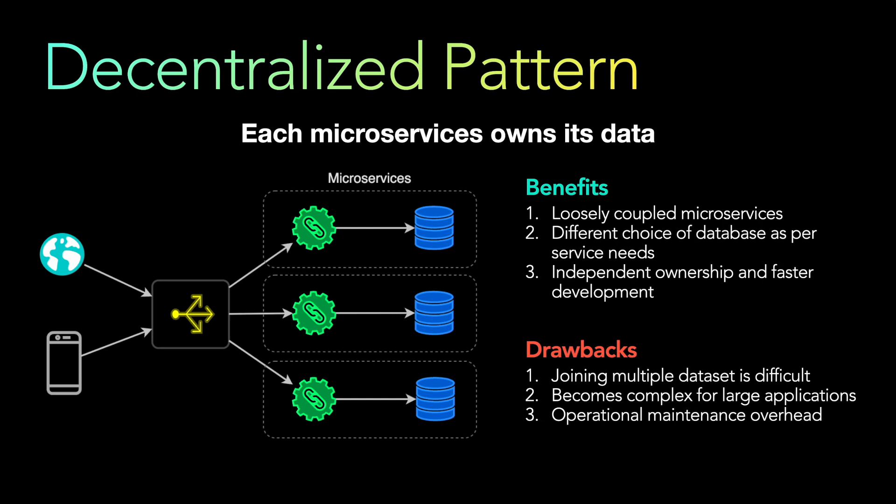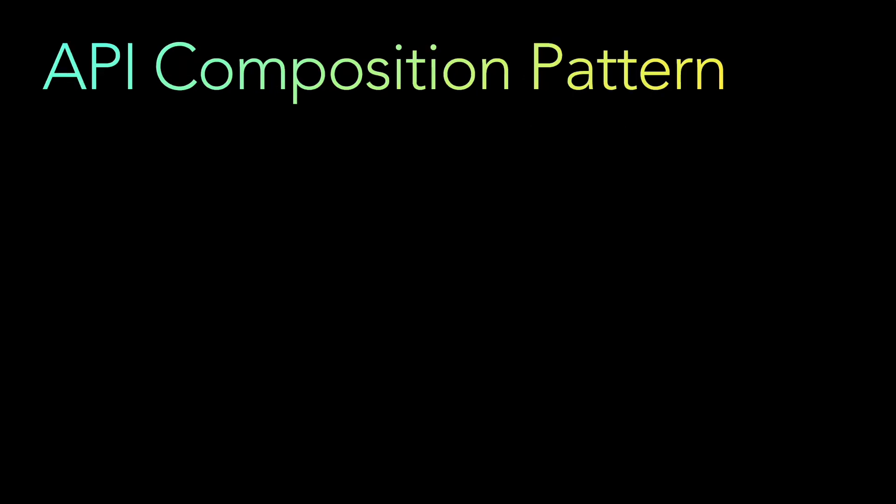One thing to keep in mind is that with this pattern, if clients are directly calling the microservices, aggregating data across multiple microservices can be a challenge. There is another pattern that solves that problem — the API composition pattern — which we are going to talk about next.